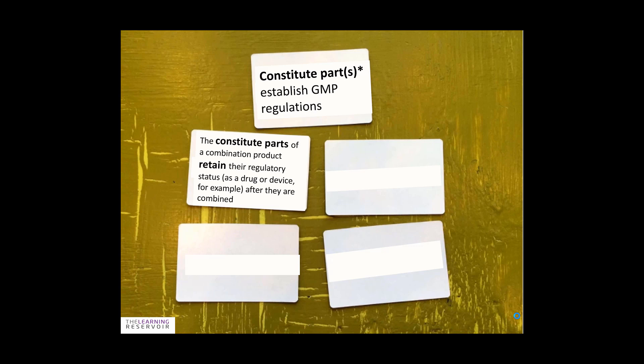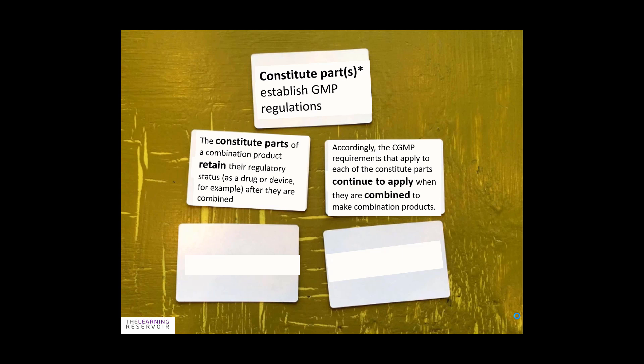So even though they go into one product to form a combination product, they are always viewed as being a combination of a drug or device. That's never forgotten — that's really important to remember. They retain their regulatory status as a drug or device even though they are now a combination product. Accordingly, the CGMP requirements that apply to each of the constituent parts continue to apply when they're combined to make the combination product.